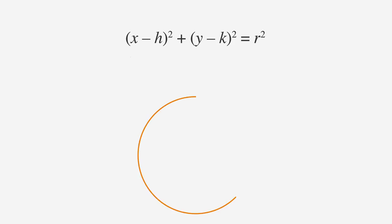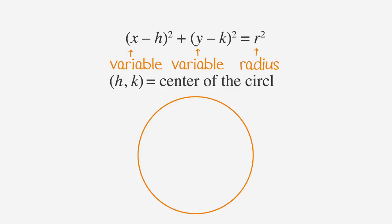The general equation of a circle is x minus h squared plus y minus k squared equals r squared, where x and y are variables, r is the radius, and the point h,k is the center of the circle.